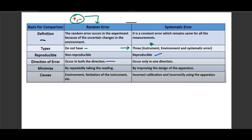The direction of error in random errors goes in both directions — either positive or negative — and it is unpredictable whether it will be overestimating or underestimating the value. To minimize random errors, you repeat the experiment and take the average. For systematic errors, you must identify the source, retest the equipment and apparatus, and review your physical practices when conducting the experiment. Only then can you minimize or eliminate systematic errors.